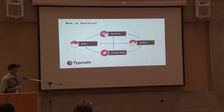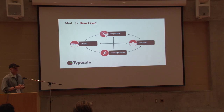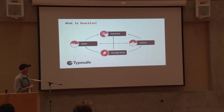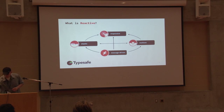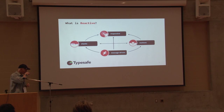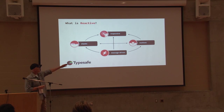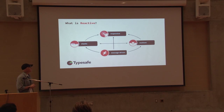It has these four components to it. You'll see these boxes with arrows, and the arrows definitely mean something. At the top is responsiveness. To the left and right we have resilience and elasticity, and at the bottom we have message-driven. Message-driven supports elasticity, message-driven supports resilience, and it supports responsiveness.